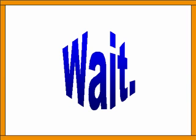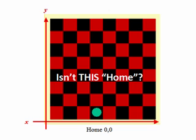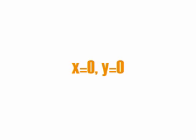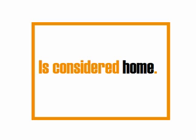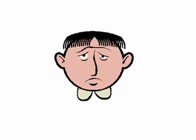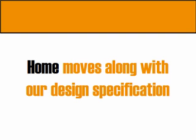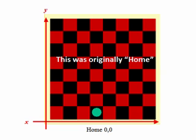Let's go back and review the idea of home. Remember back on our checkerboard — from the first time we looked at this — we set an arbitrary home at point 0,0 down on the baseline of the checkerboard. The important thing to remember is we can move that home anywhere on our material. Wherever our machine is set to zero-zero becomes home. As long as X equals zero and Y equals zero, it's considered home, so we can arbitrarily move that around the material anywhere we need to based on our job specification.